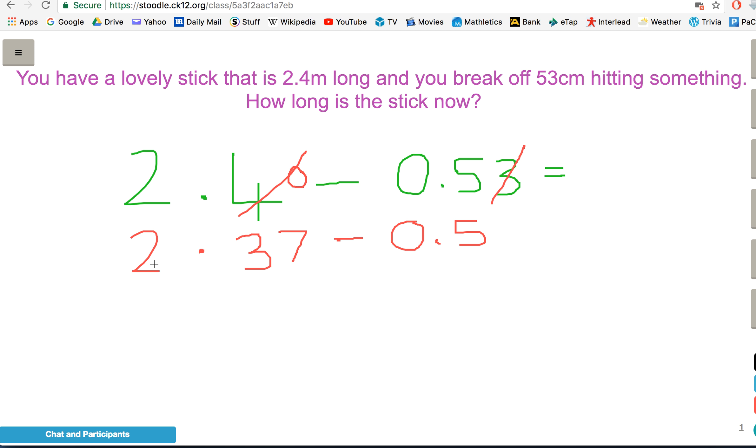Okay. Now, we've just got to take away these five-tenths. 2.37 take away three-tenths is 2.07. Take away two more tenths is going to be 1.87.